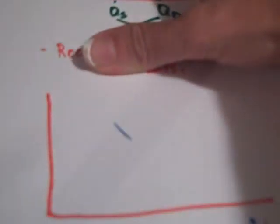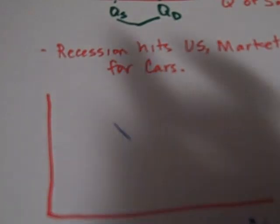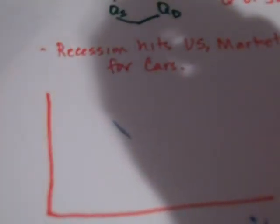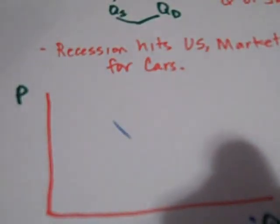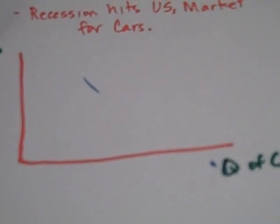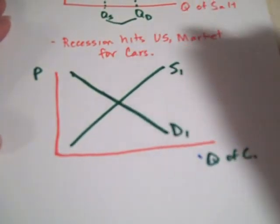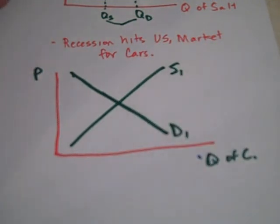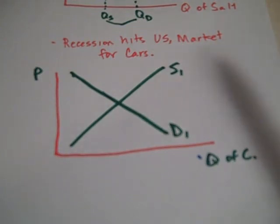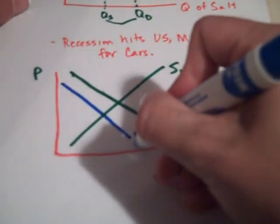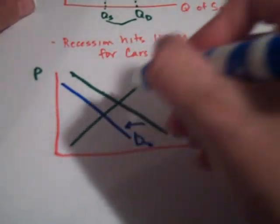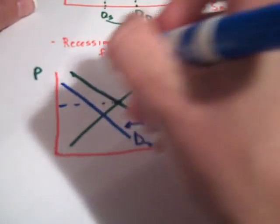If we look at another example: a recession hits the U.S. market for cars. You have your price and your quantity of cars, your demand curve and your supply curve. Recession hits — that's going to affect the level of income in the United States. Cars are a normal good, so people buy more cars when their income rises, and in turn, when their income falls, they demand less at every price. So the demand curve shifts to the left. At this price — which is where the price was before — what makes it actually move down?